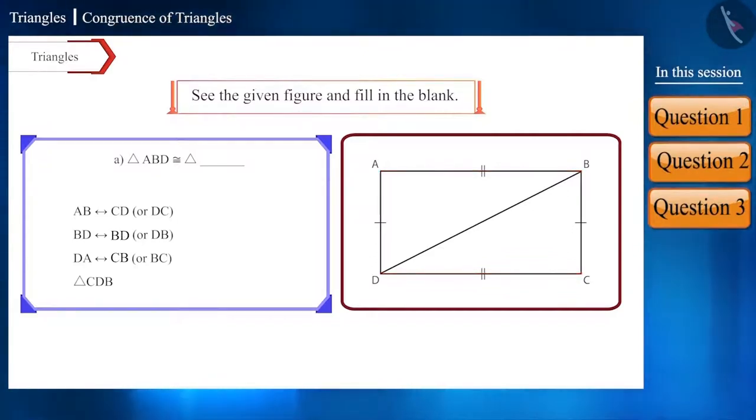Similarly, moving forward in the same order, BD will be congruent to BD, or it can also be called DB, and DA will be congruent to CB or BC. Similarly, we got the name of the second congruent triangle as triangle CDB.